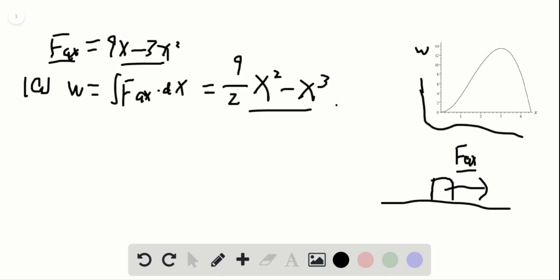And for part B, we want to find out at which position the work is maximized. So basically, it's just dW/dx equal to 0, because we want to find out the maxima. So we find that dW/dx, actually, it is just FAx.